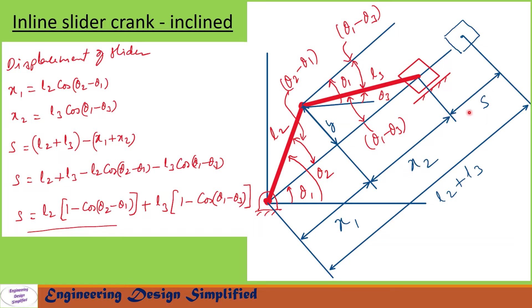The displacement of the slider is S. Now let us write x1: x1 can be written as L2 cos(theta 2 minus theta 1), since this angle is theta 2 minus theta 1 and the link length is L2. Similarly, x2 can be written as L3 cos(theta 1 minus theta 3), since this length is L3 and this angle is theta 1 minus theta 3.